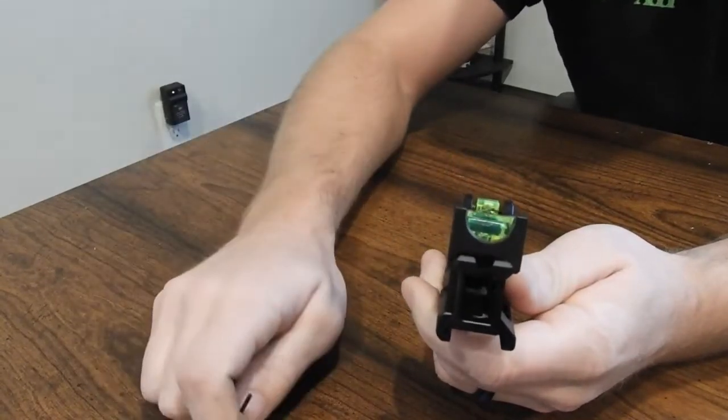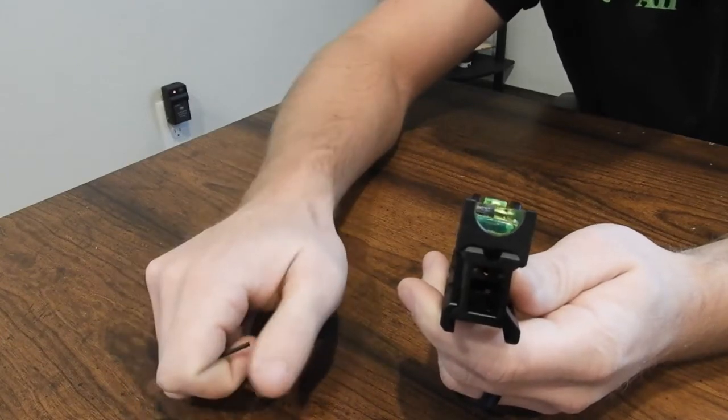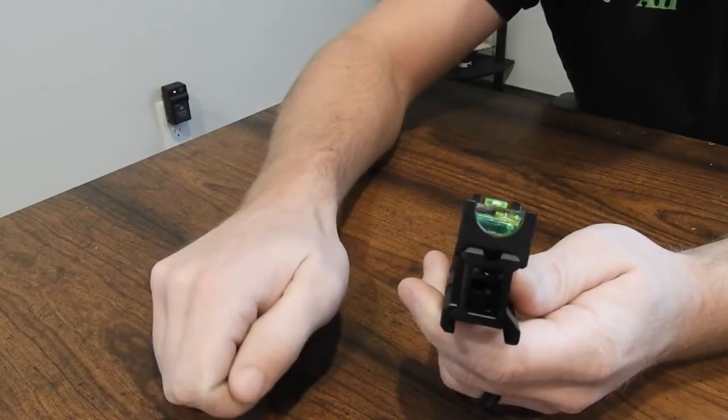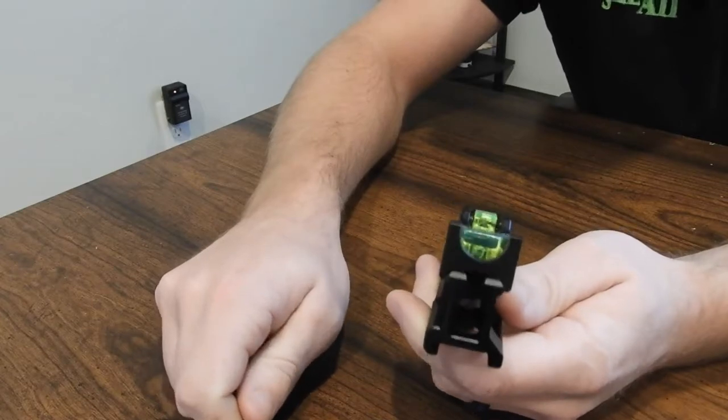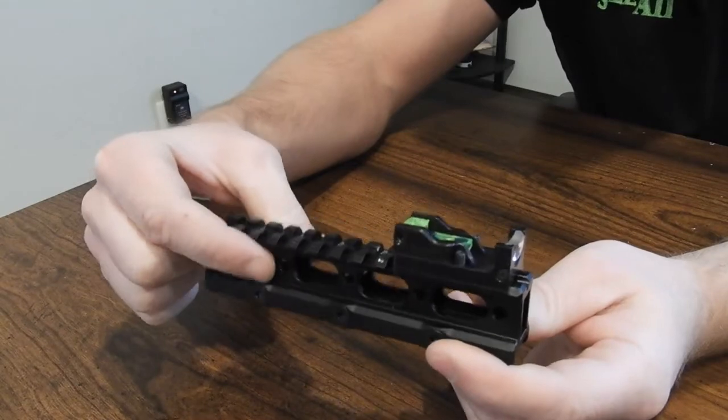These have a nylon pad on them that should prevent it from marking up your rail and then it should also act as a kind of a Loctite system rather than just metal on metal. If you're worried about it, put a little bit of blue Loctite on them and then there's no way it's coming off of there.